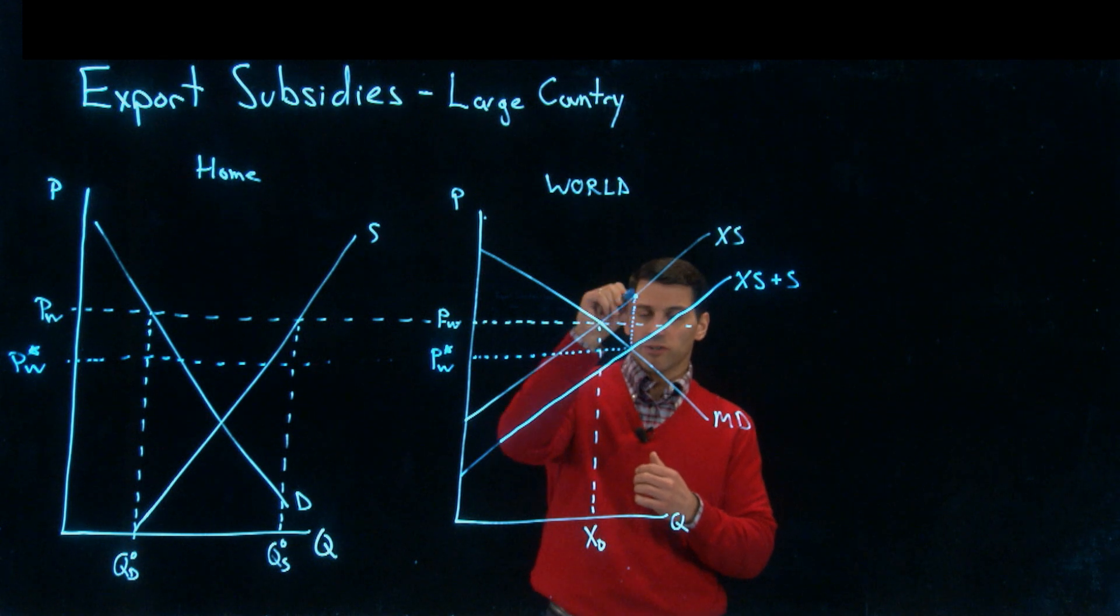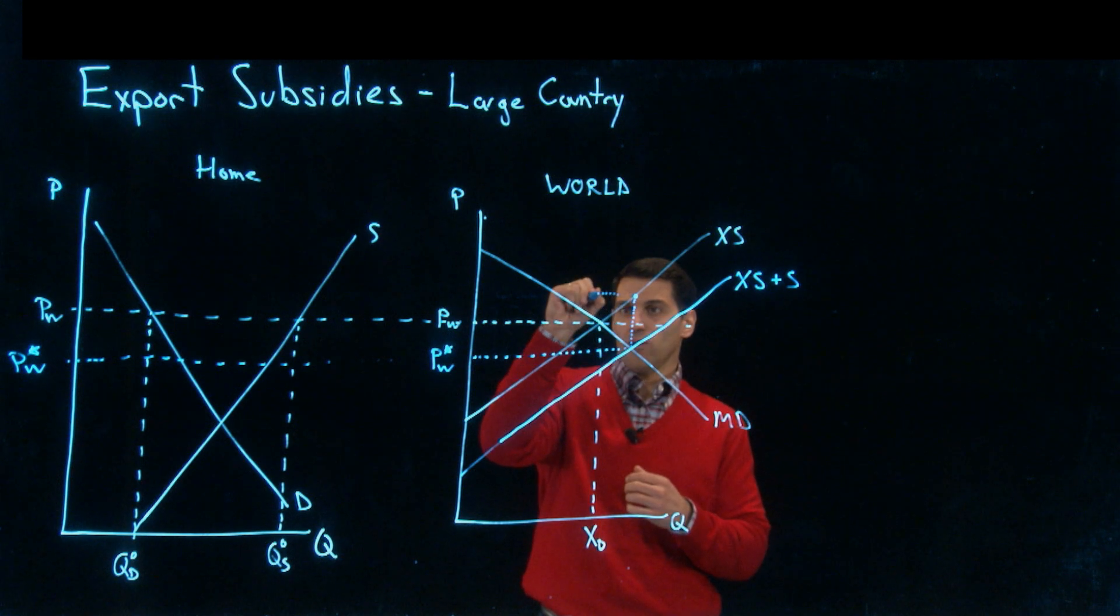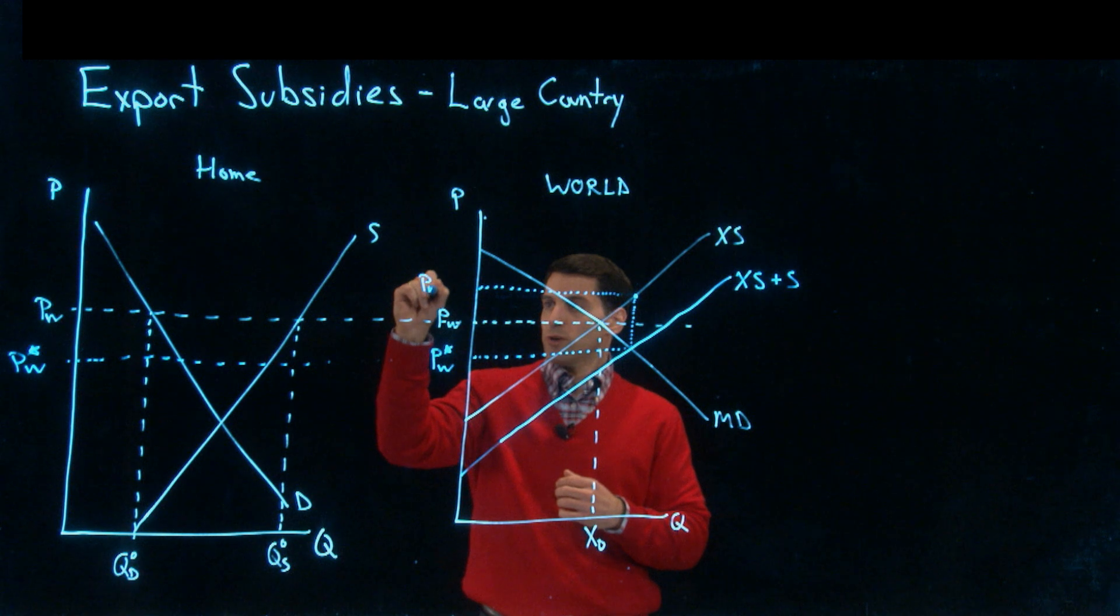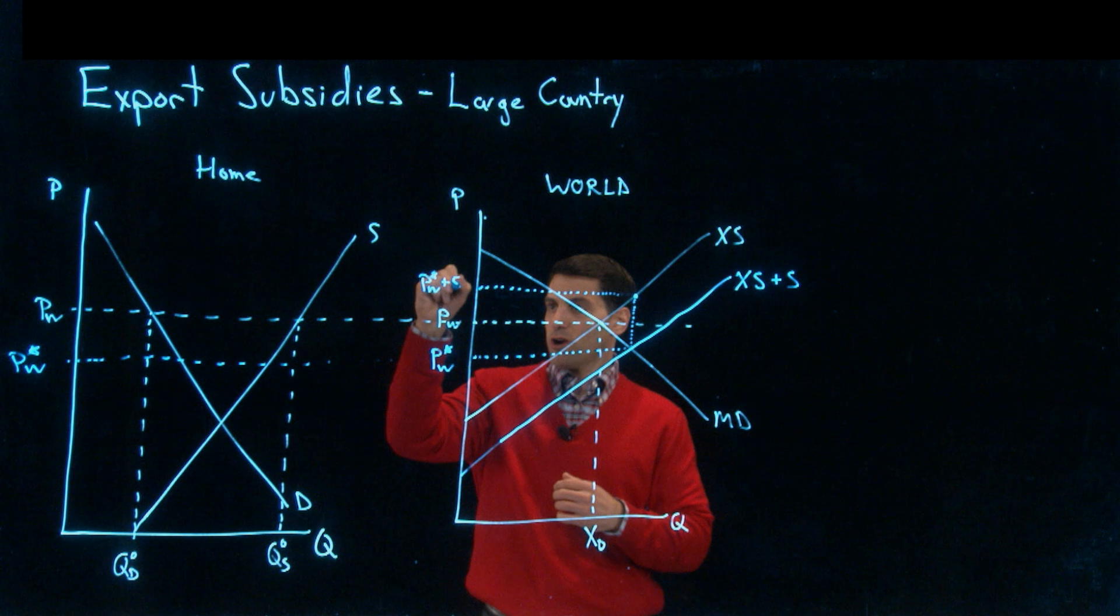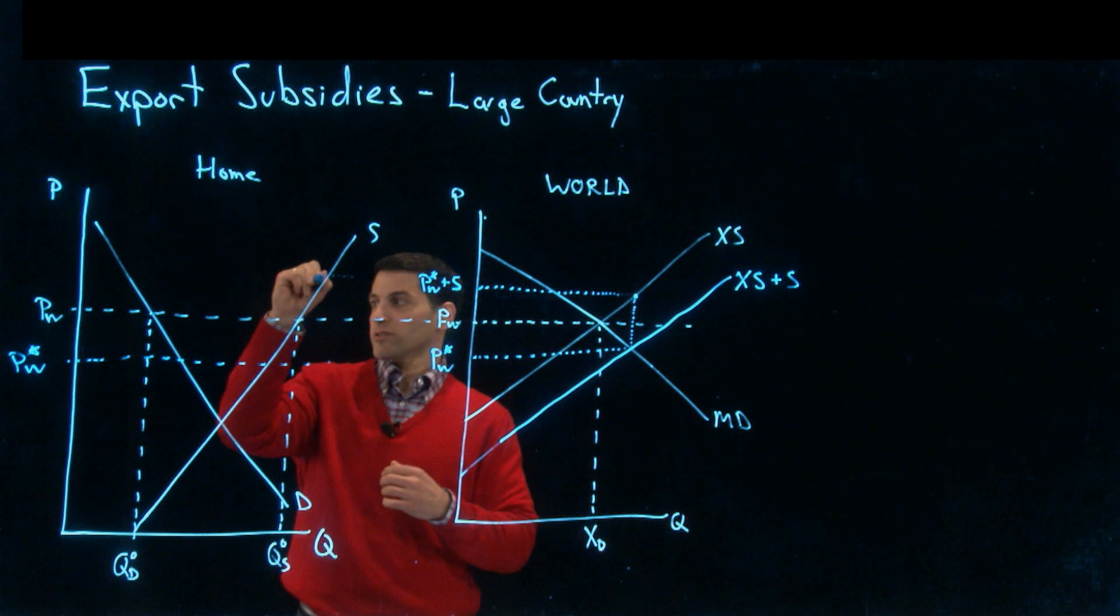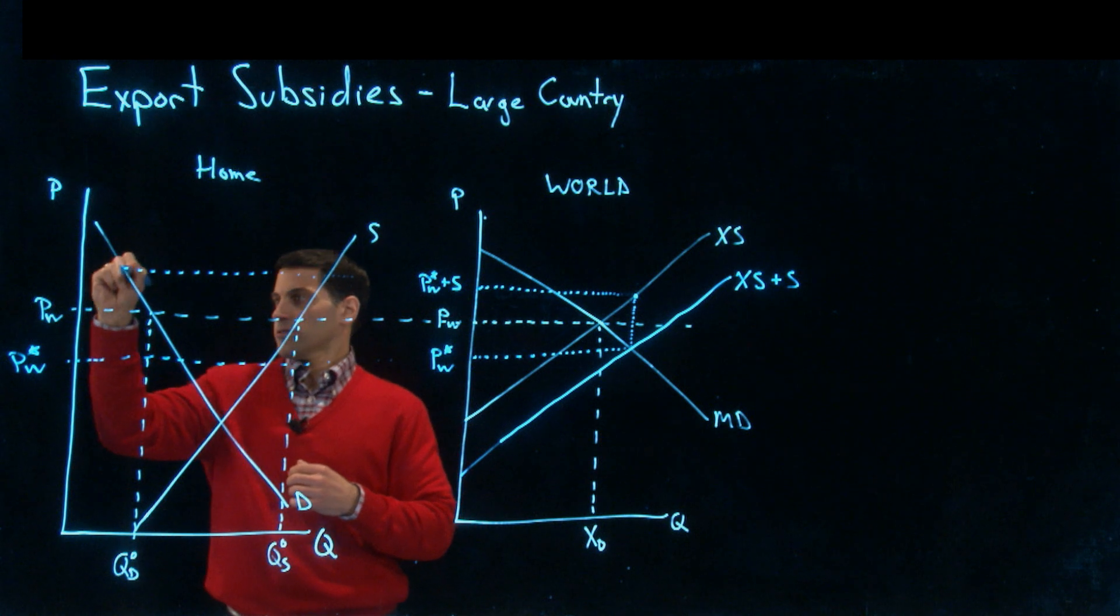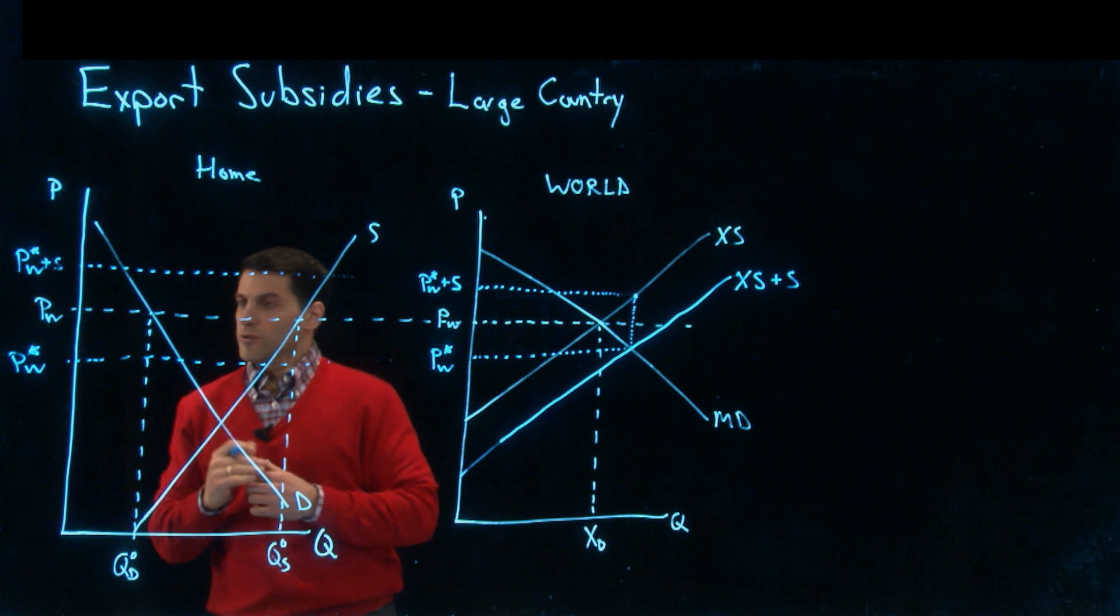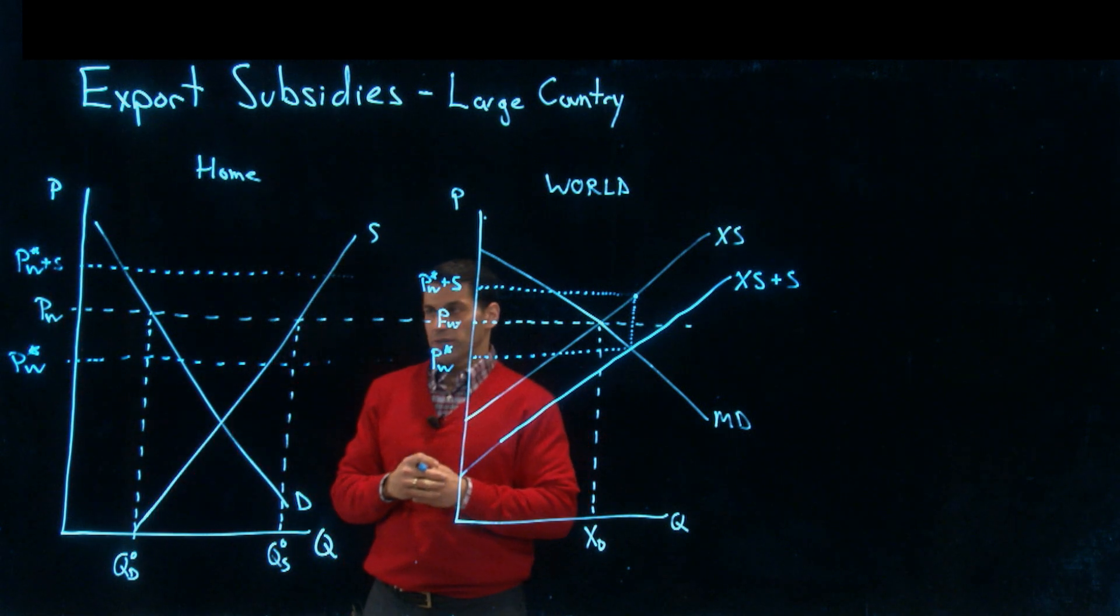You've got to add the subsidy back in here. Remember that the subsidy is the vertical distance between the two supply curves. We've shifted the supply curve down by the amount of the subsidy. What the producers actually get when they export is PW star plus S. We'll draw that price across and we have that price there.